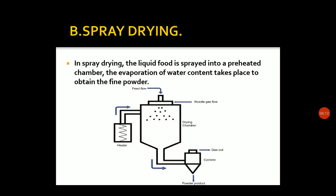For example, we use spray-drying to produce milk powder. We preheat the chamber, spray the liquid food, the water escapes, and we collect the solid particles in powder form.